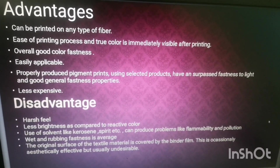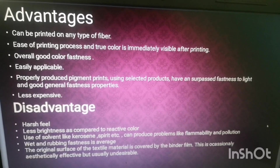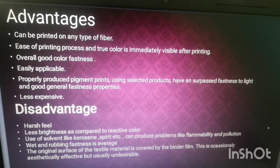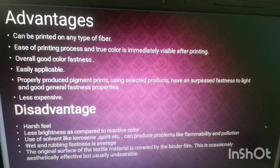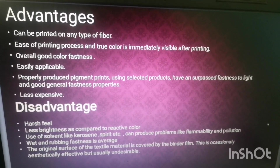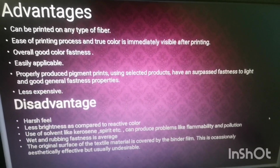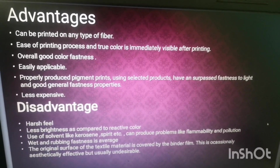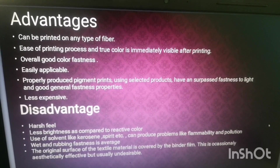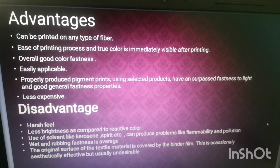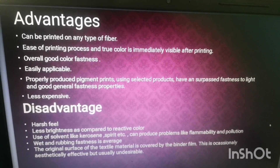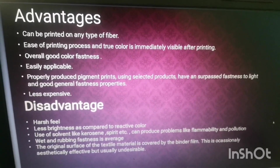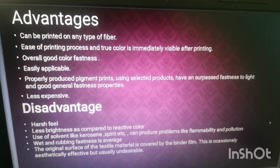Disadvantages: use of solvents like kerosene spirit and TCE can produce problems like flammability and soil pollution. Wet and rubbing fastness is average. The original surface of the textile material is covered by the binder film, which is occasionally aesthetically effective but usually undesirable.